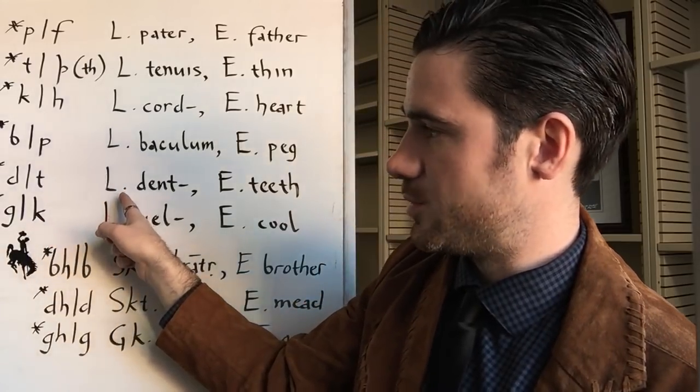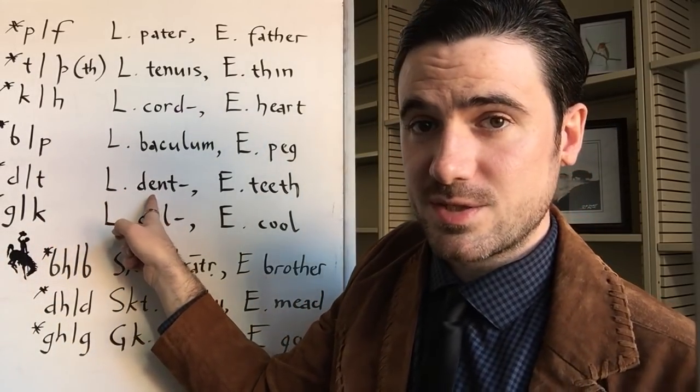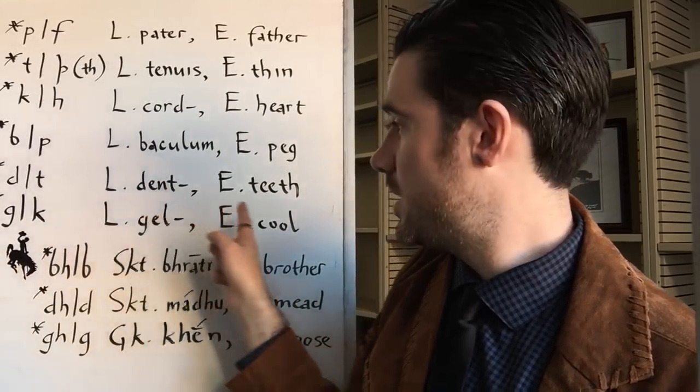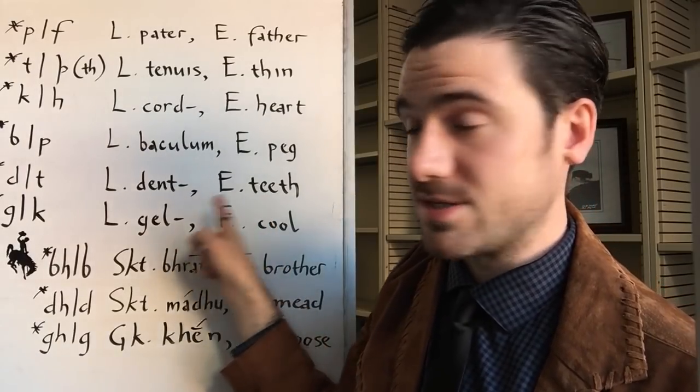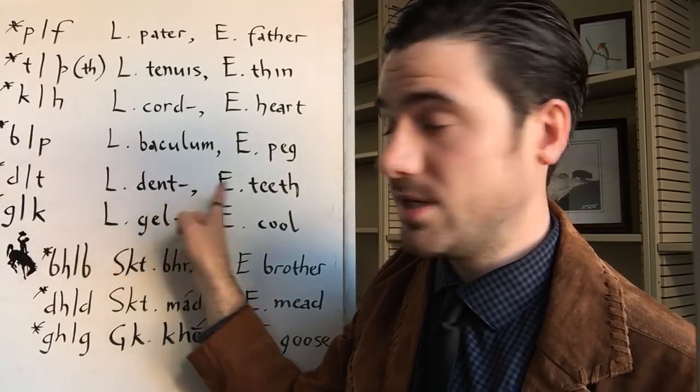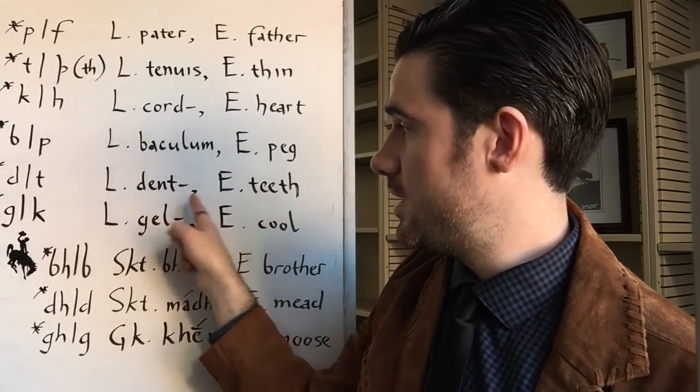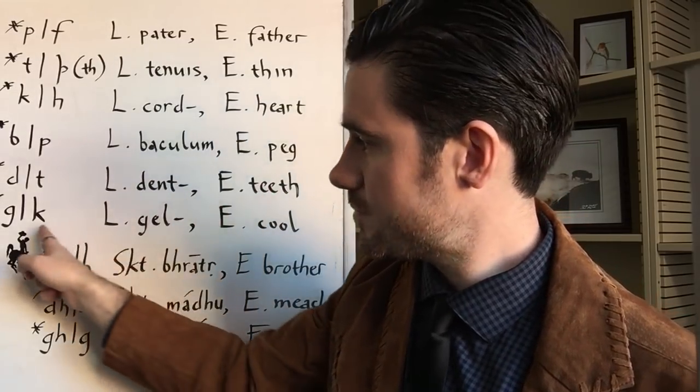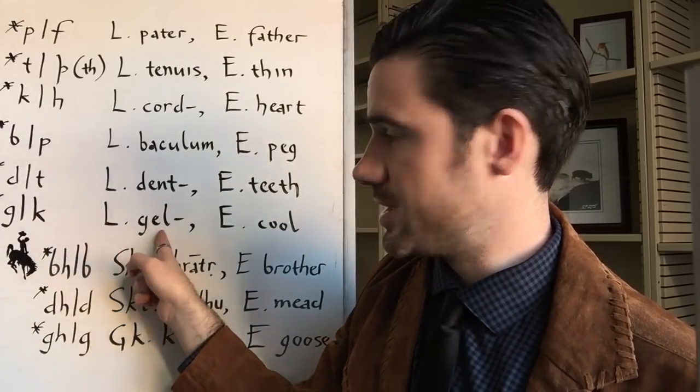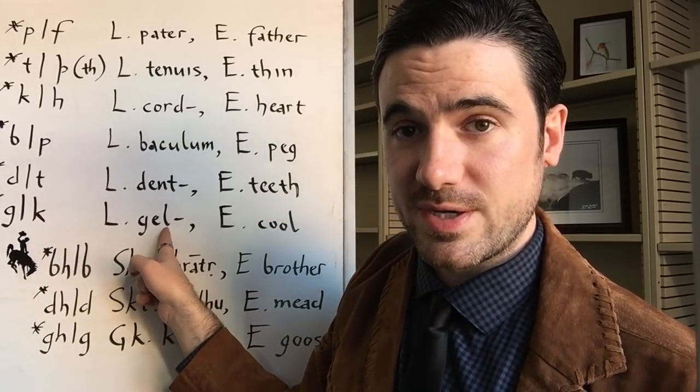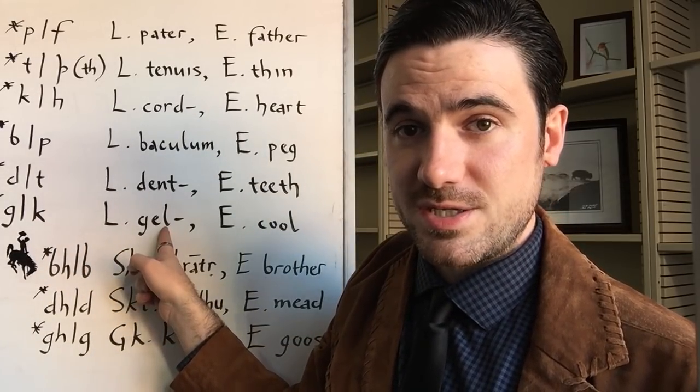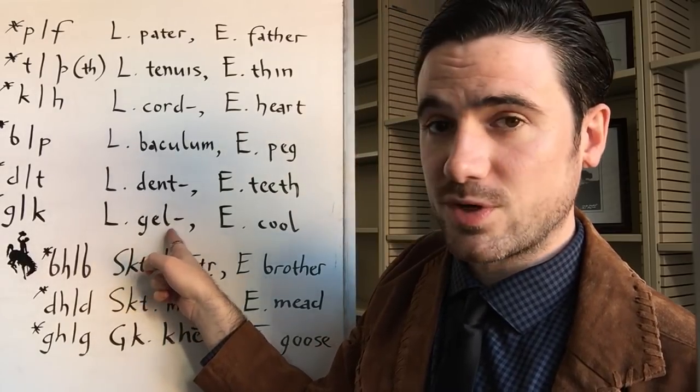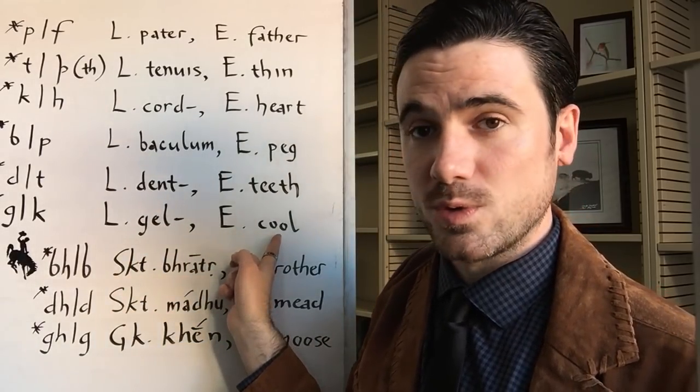There's also D to T, which there are more examples of. Latin dent, or Greek odont for tooth, cognate with English teeth. This also gives you a nice example of T to TH. The loss of N before fricative here in English is quite regular. G to K, there's the Latin root gel, that you'll find in English words like gelid or glacier. This is a root for cold. And then English words like cool and cold.